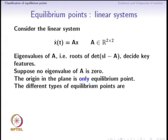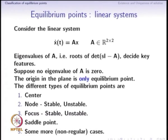We begin assuming A has no eigenvalue at 0, meaning A is non-singular. In this situation, the origin is the only equilibrium point. The different types of equilibrium points are: a center, a stable or unstable node, a stable or unstable focus, a saddle point, and other situations such as repeated roots or one or more eigenvalues at 0, which we will see separately.